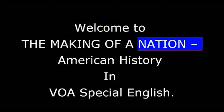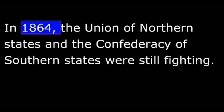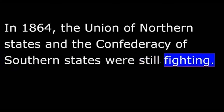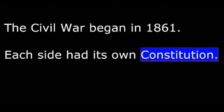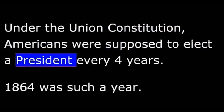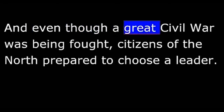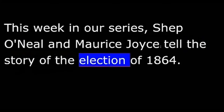Welcome to The Making of a Nation, American History in VOA Special English. In 1864, the Union of Northern States and the Confederacy of Southern States were still fighting. The Civil War began in 1861. Each side had its own constitution. Under the Union Constitution, Americans were supposed to elect a president every four years. 1864 was such a year, and even though a great Civil War was being fought, citizens of the North prepared to choose a leader. This week, Shep O'Neill and Morris Joyce tell the story of the election of 1864.